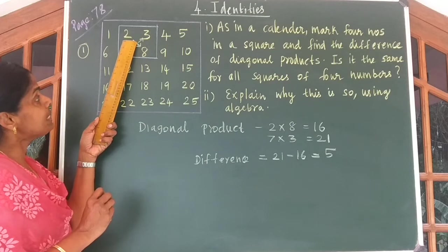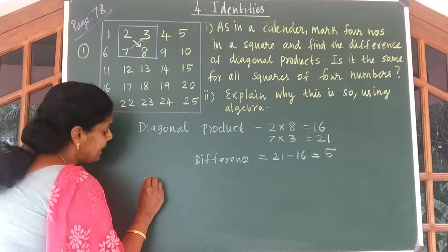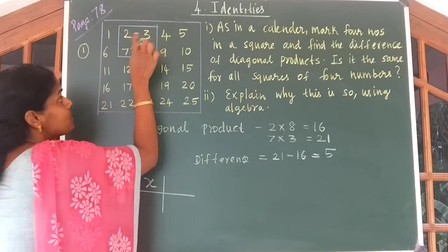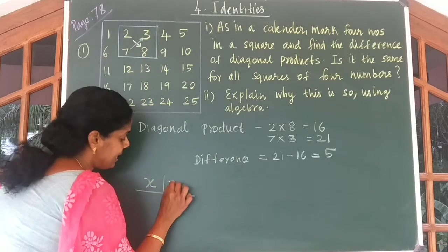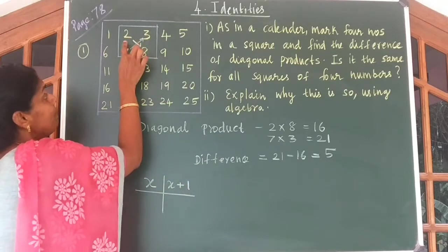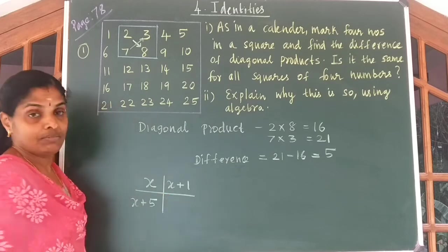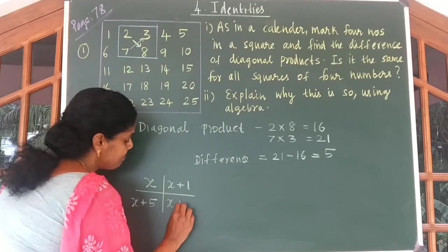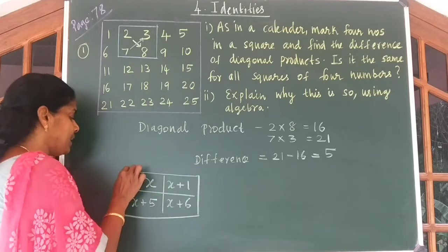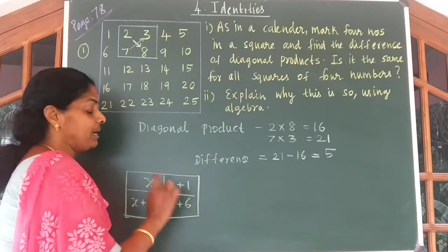So let us take the first number instead of 2, let me take it as x. So I can write the first number as x. The second number: 2 plus 1 gives you 3, so I should write x plus 1. What about the next number? 2 plus 5 gives you 7, so here I should write x plus 5. Next number: x plus 6. So using variables, we can write the 4 numbers as x, x plus 1, x plus 5, and x plus 6.